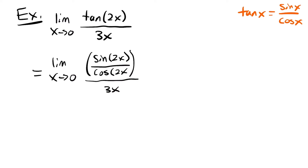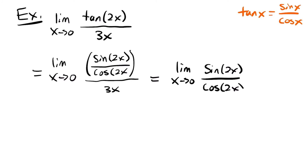The next step is to simplify this a little bit. We see we have this 3x on the bottom, so remember, if you're dividing by something, you can rewrite this as the numerator multiplied by the reciprocal of the bottom. I'm going to rewrite this as the limit as x approaches 0 of sine of 2x over cosine of 2x multiplied by 1 over 3x. Now I see that we have sine of 2x on the top, so I need a 2x on the bottom to use my special limit giving me 1. The cosine term here isn't a problem because cosine of 0 is 1, but this 3x is going to be a problem because plugging in 0 gives 0 in the denominator.